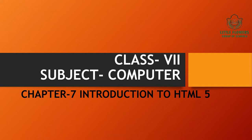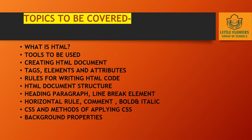Hello students, today we are going to start Introduction to HTML 5, Chapter 7. In this chapter we are going to cover: what is HTML, tools to be used, creating HTML documents, tags, elements and attributes, rules for writing HTML code, HTML document structure, heading, paragraph, line break element, horizontal rule, comment, bold and italic, CSS and methods of applying CSS, and background properties.